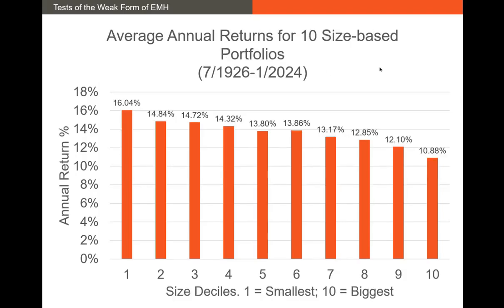Now we have the size anomaly. With the size anomaly, you sort all stocks in the market based on market cap and put them into one of ten deciles — the smallest stocks at one end and the biggest stocks at the other. What you can see is that the small stocks, over the next year after portfolio formation, absolutely outperform the biggest stocks.